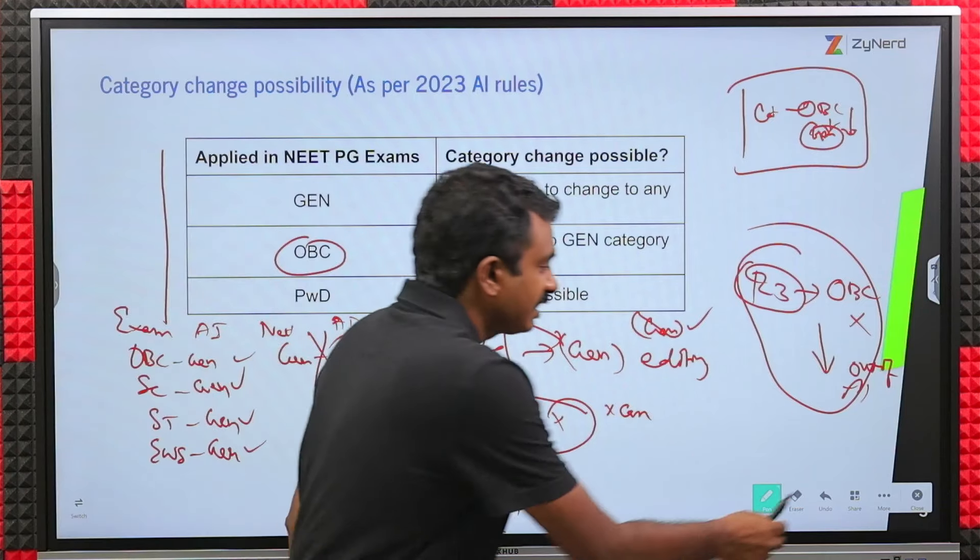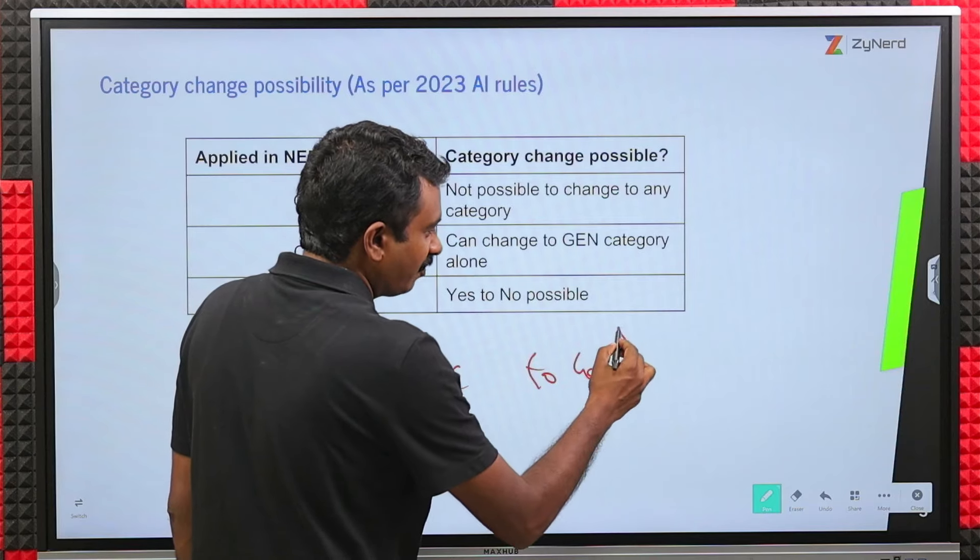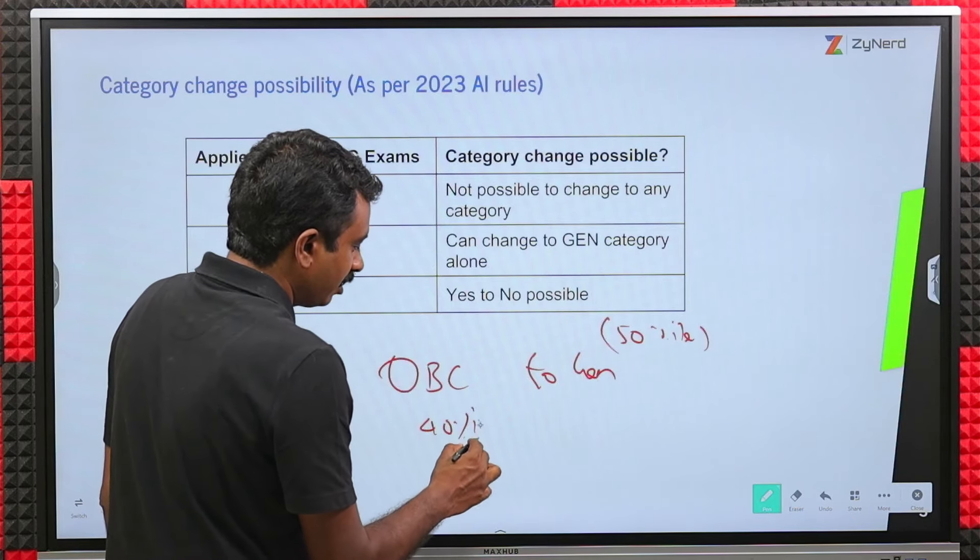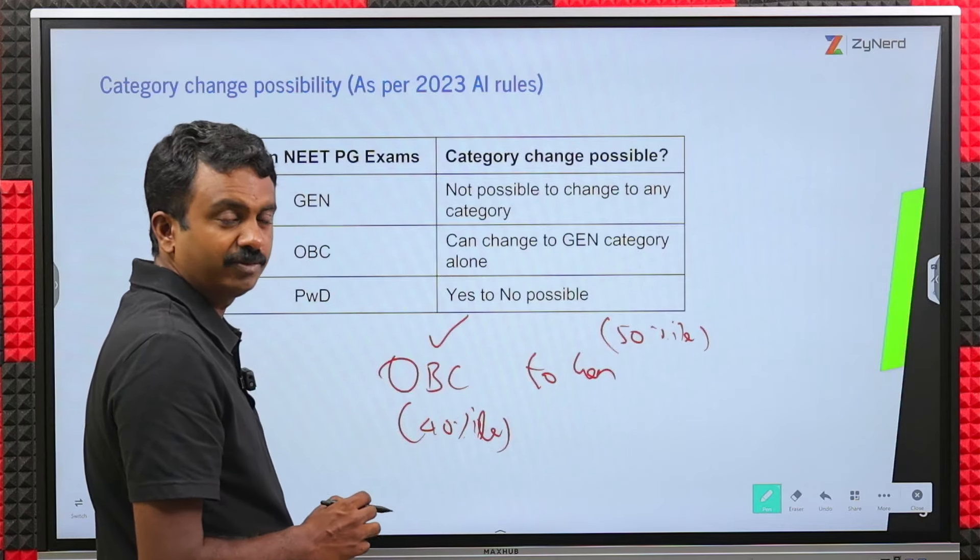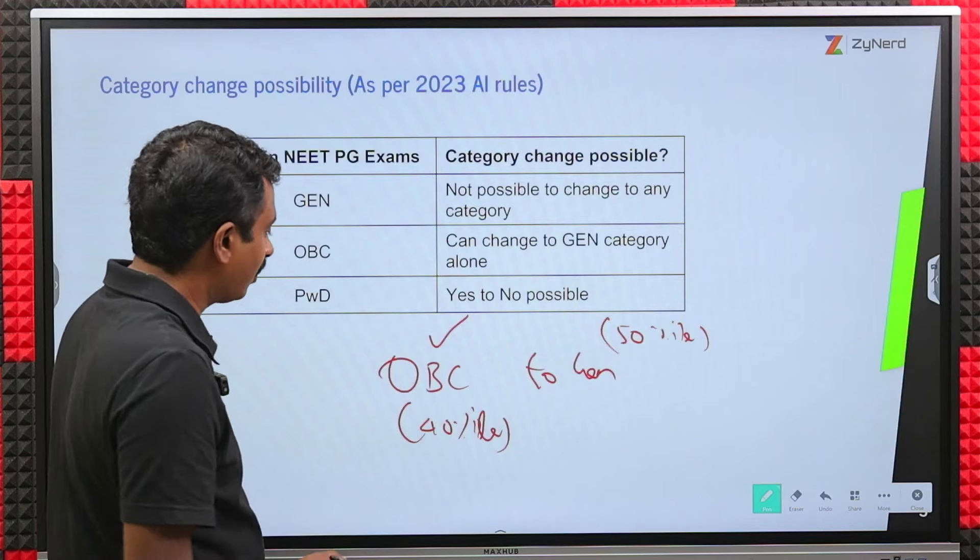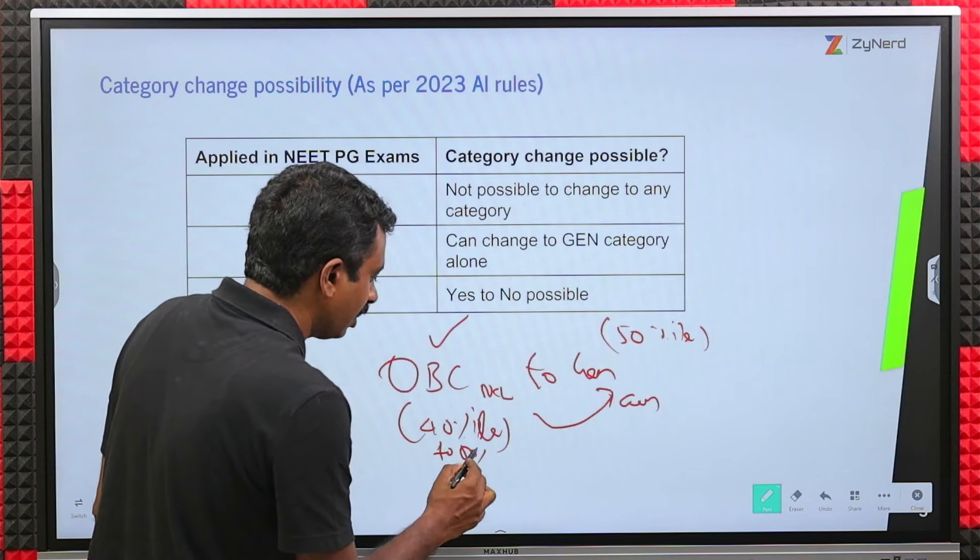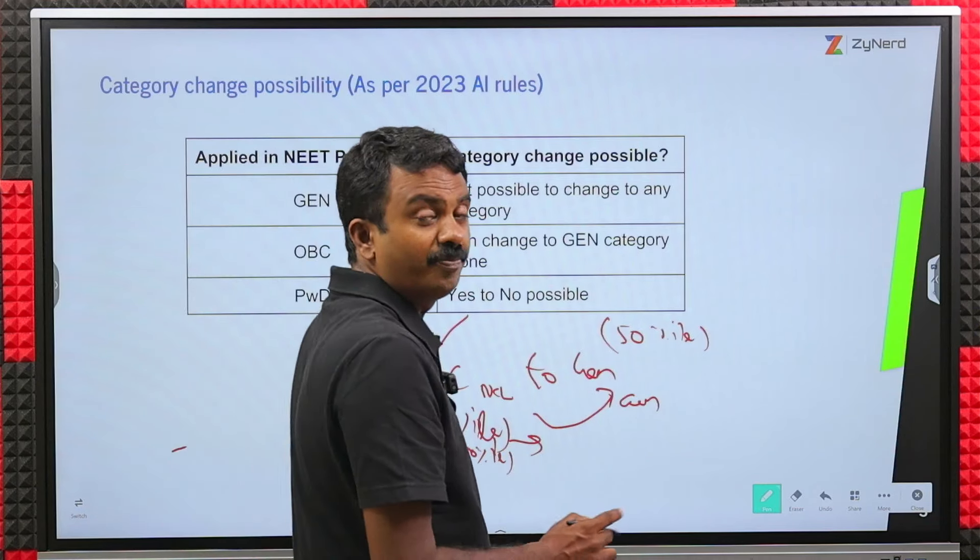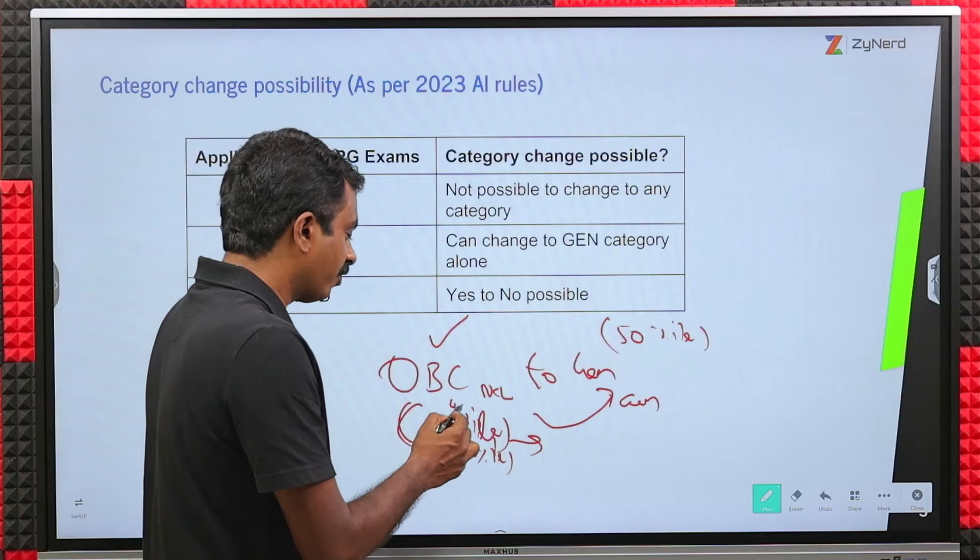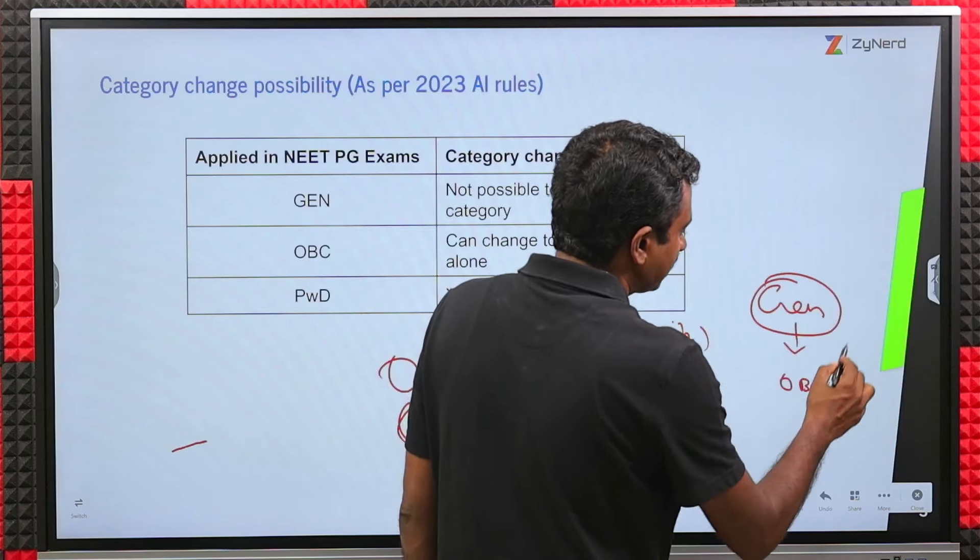One final thing to keep in mind. Let's say you are changing from OBC to Gen. Your final percentile qualification for Gen is 50 percentile. You are at 40 percentile. You are eligible as OBC. You can log in and fill deemed choices or other choices. You will not be able to fill Gen category choices. But OBC choices you can fill. But you do not have an OBC NCL certificate. The moment you change to Gen and submit, if you are between 40 to 50 percentile, you are out of the counseling. So be aware of that. Call us if you are looking for deemed universities but want to avail those seats even if you are 40 to 50 percentile. If you want to, you need a certificate only if you get an OBC seat. For a Gen seat, you do not need a certificate.